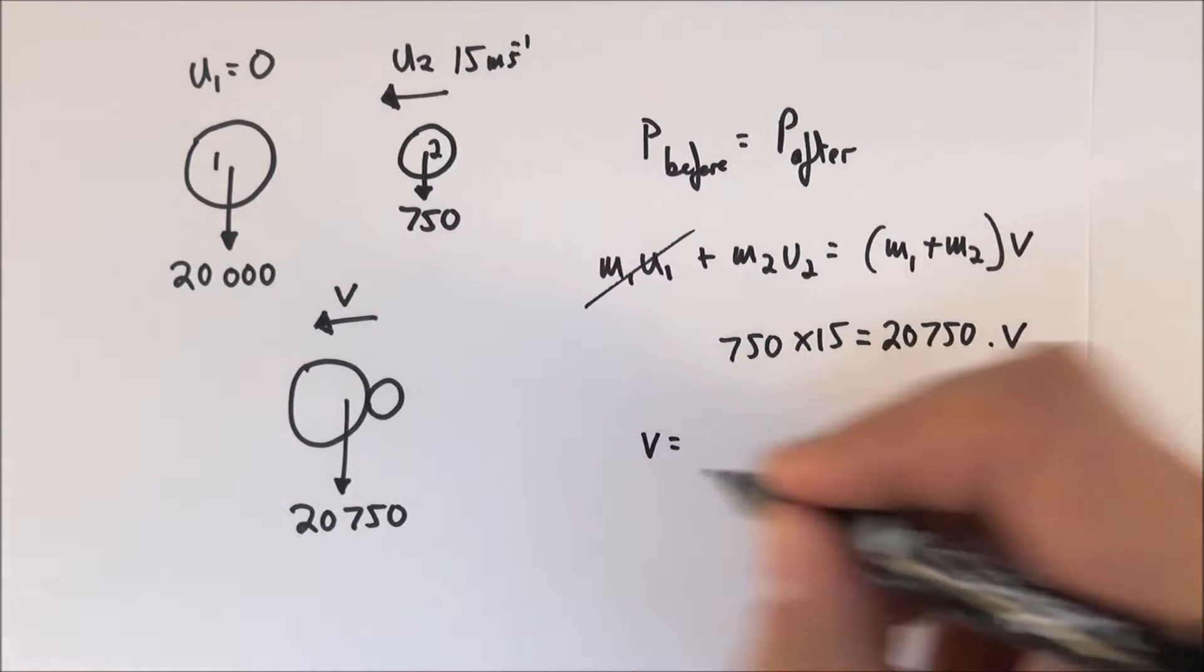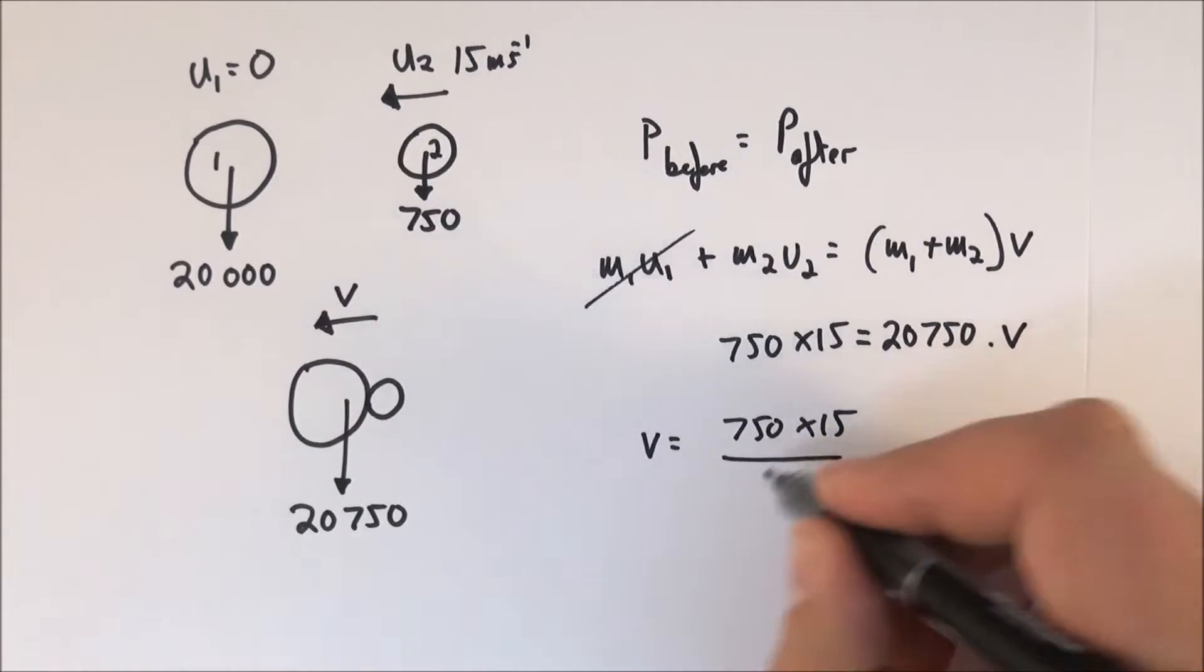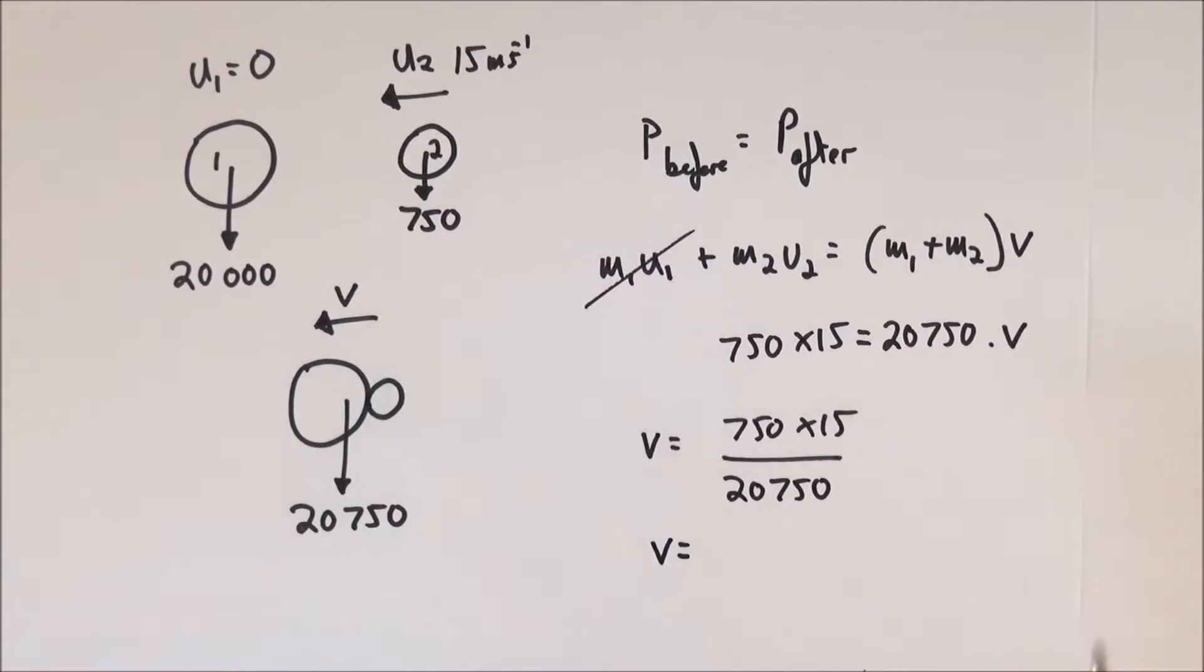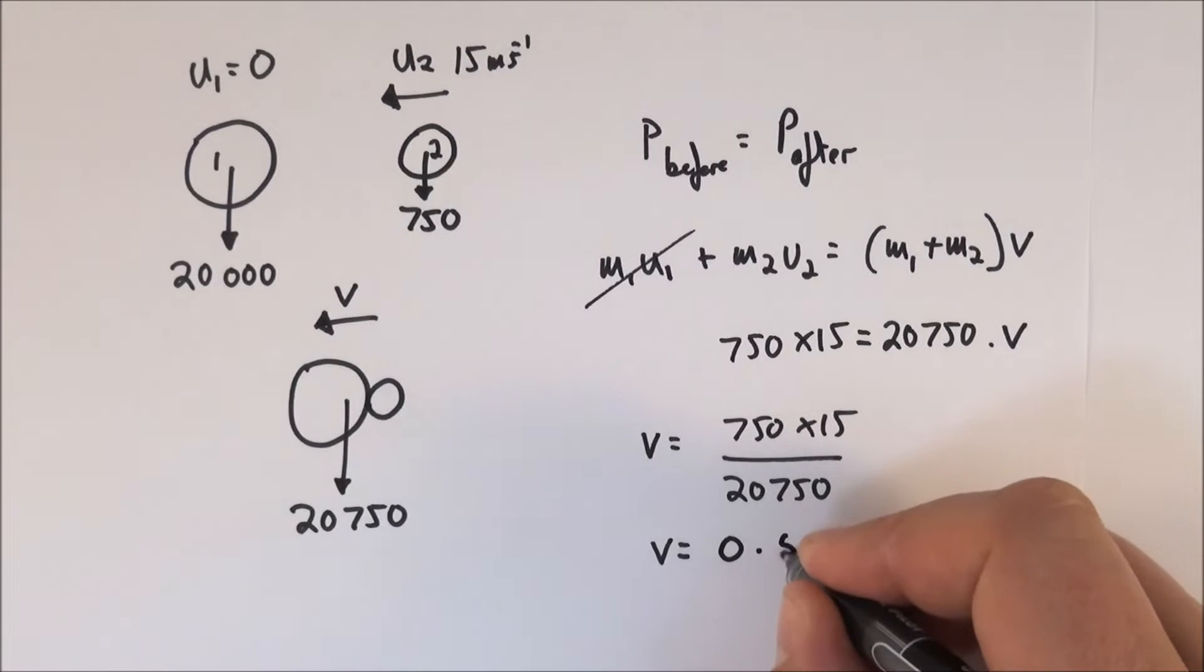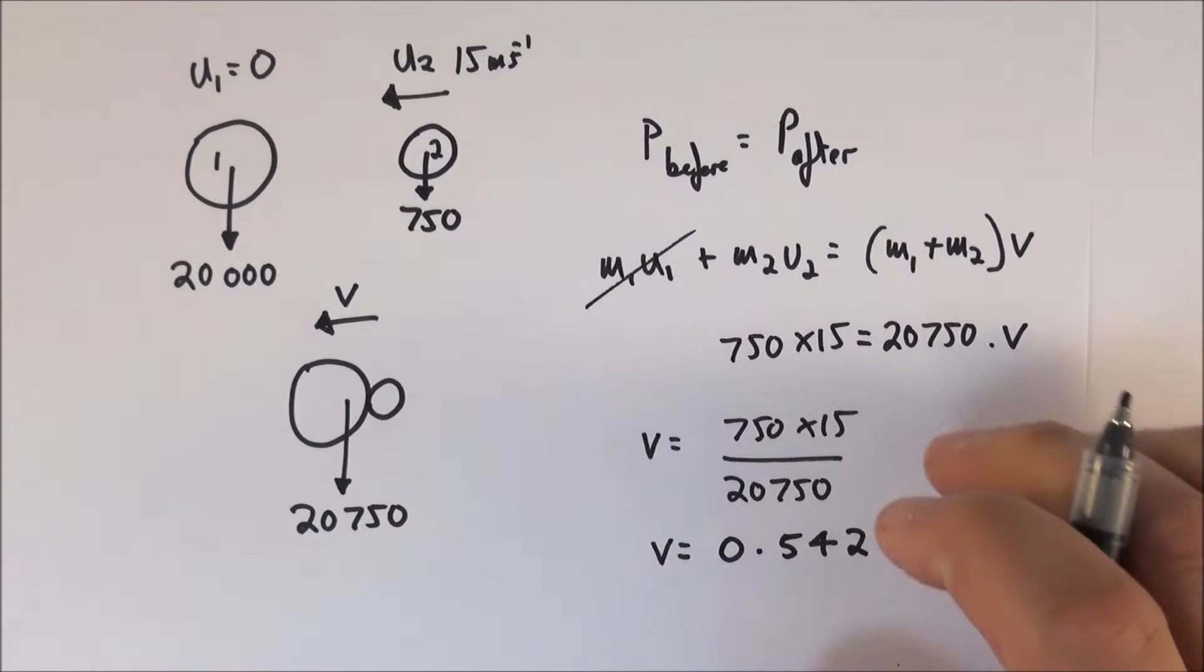If I rearrange this, V equals 750 times 15 over 20,750. The number I've just worked out in my calculator is 0.54216874. So that's what it says in my calculator.